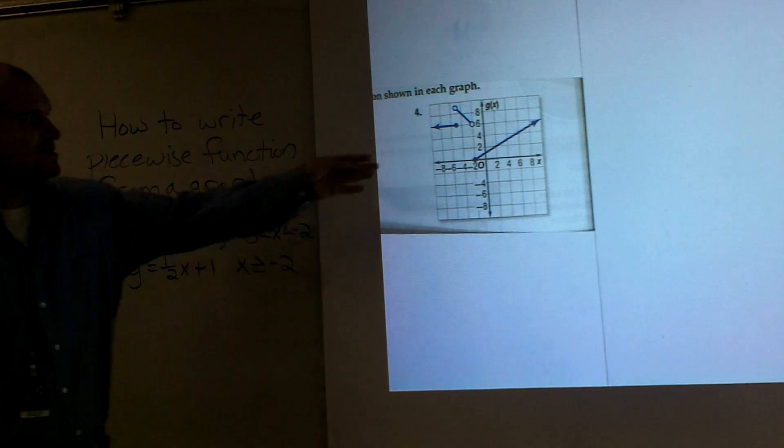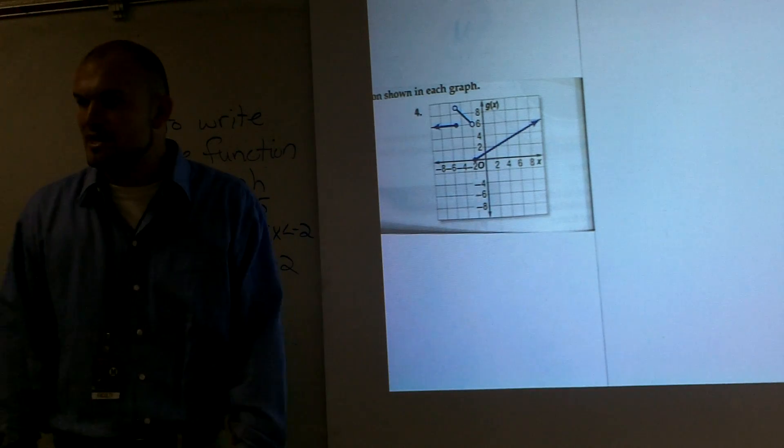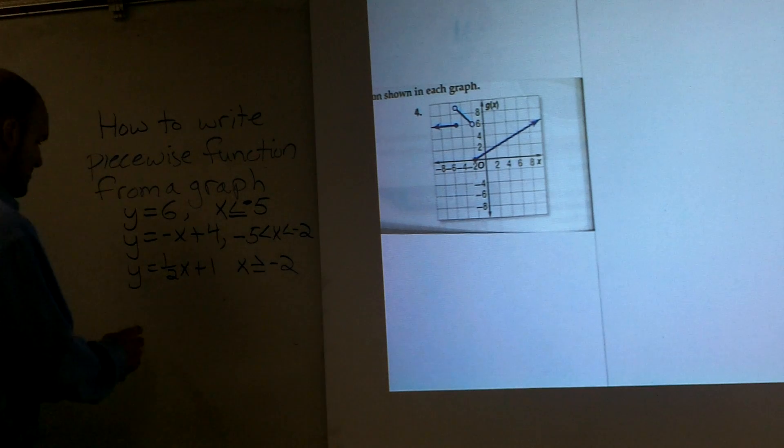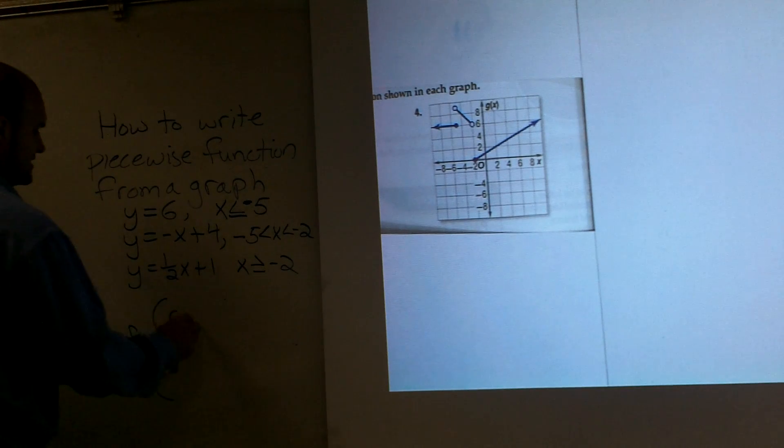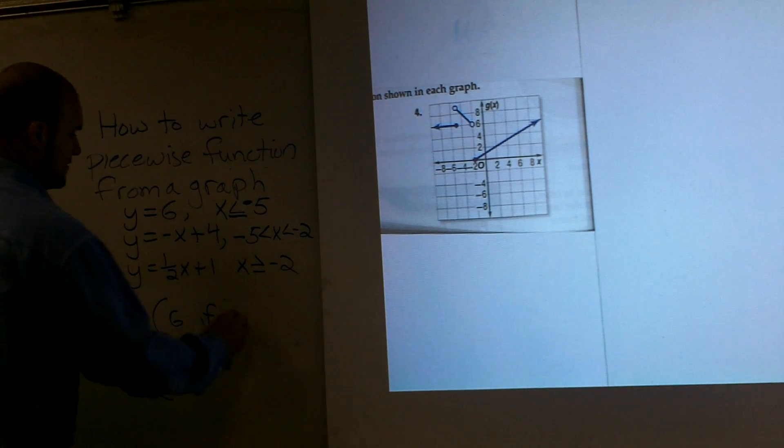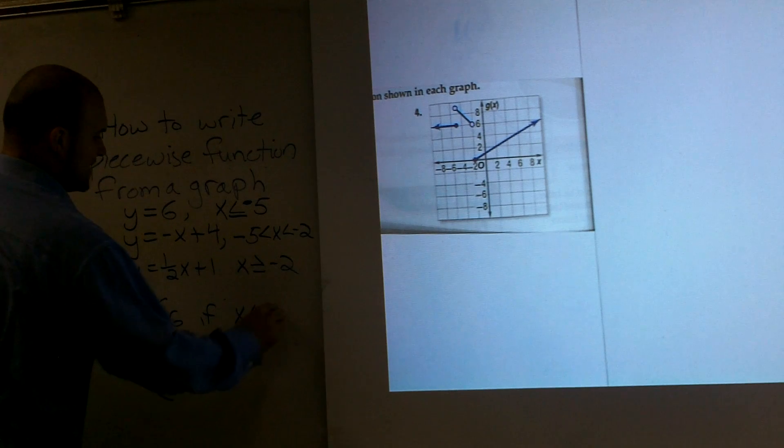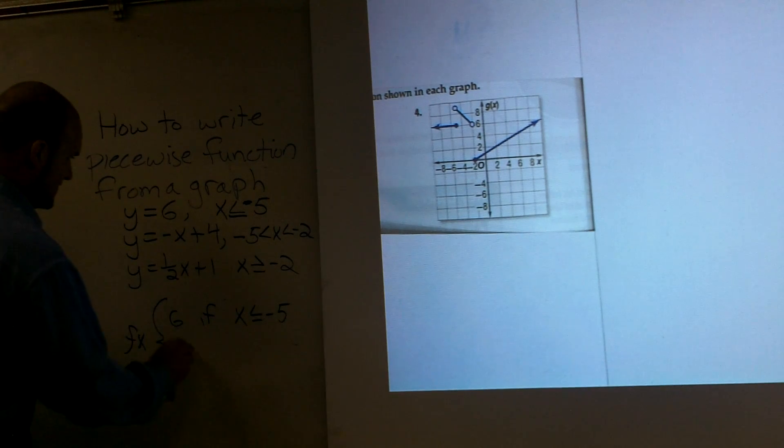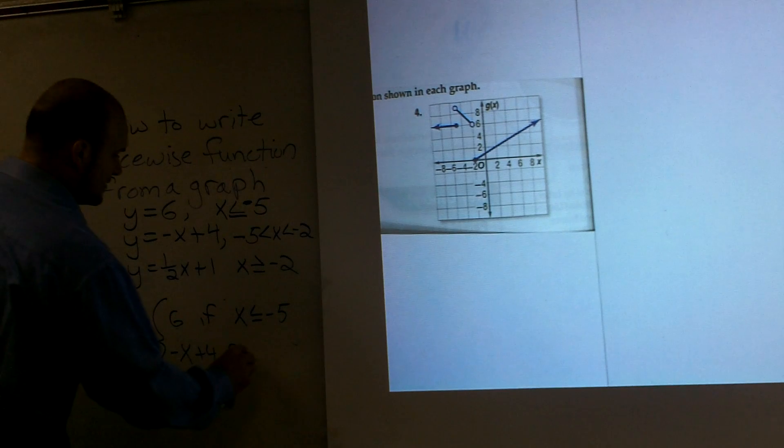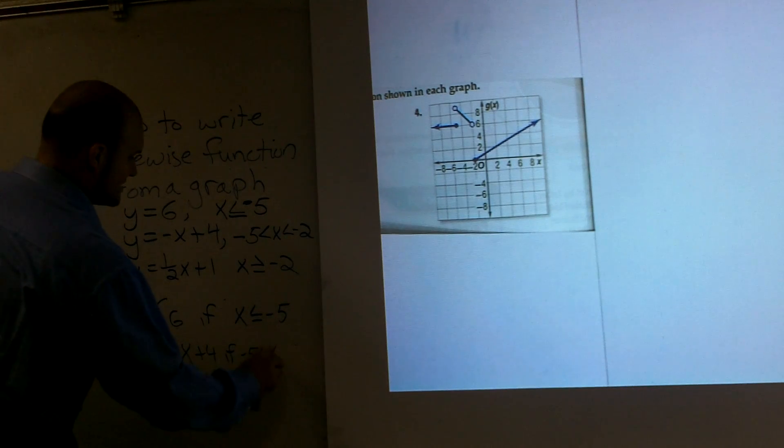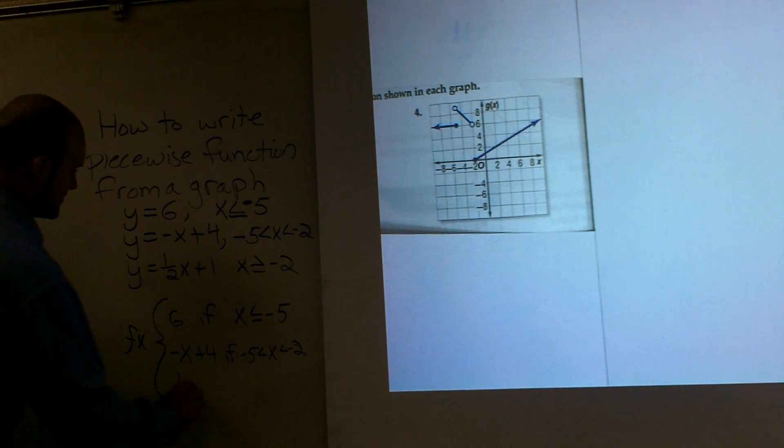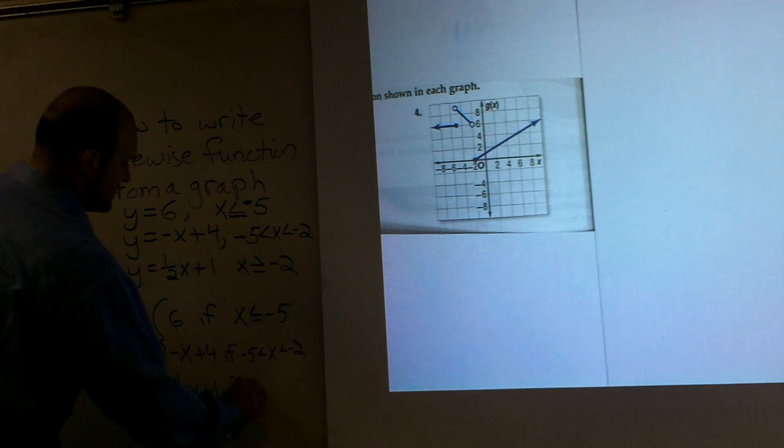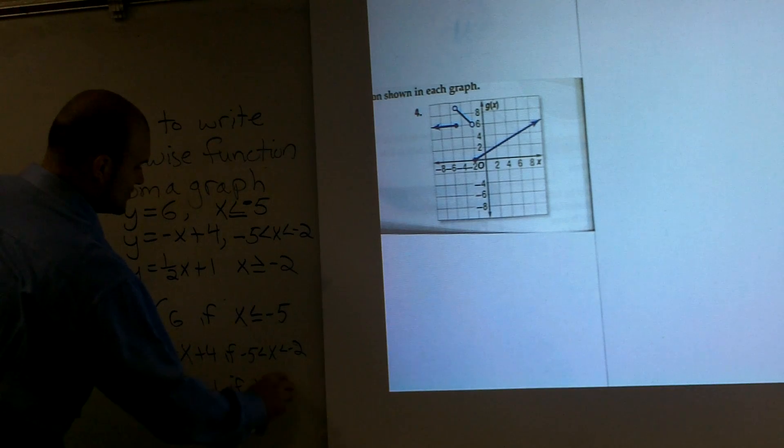So the main important thing, guys, is to write your three equations, and then you'll find your three constraints. Then you can put it in your piecewise format, which for this equation I'd write f of x. And I'd say 6 if x is less than or equal to negative 5. Negative x plus 4 if negative 5 is less than x, which is less than negative 2. And 1 half x plus 1 if x is greater than or equal to negative 2.